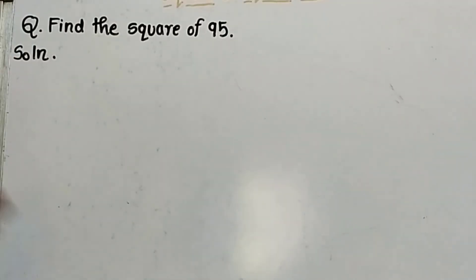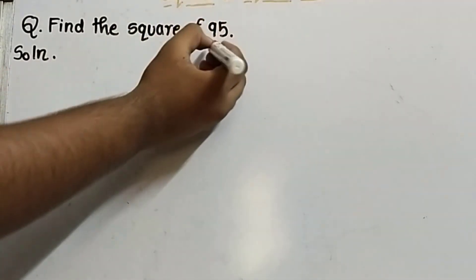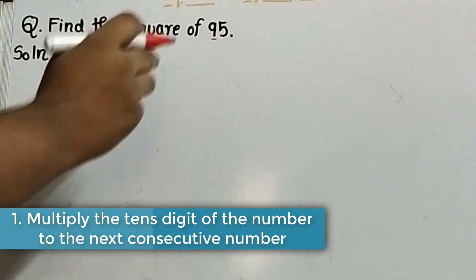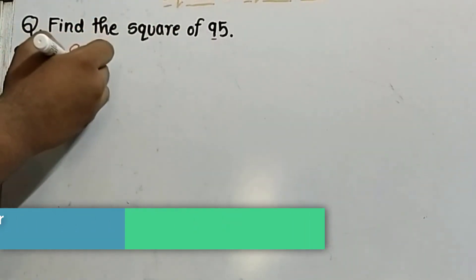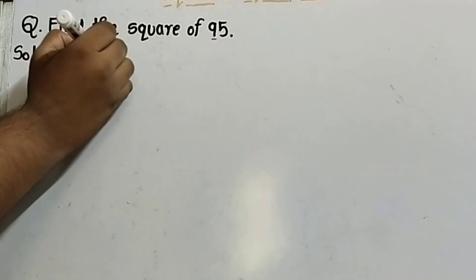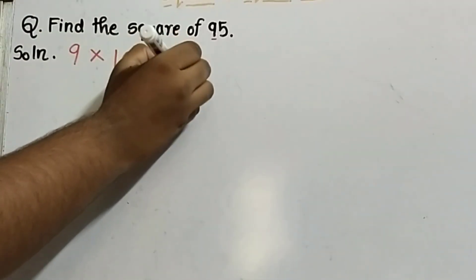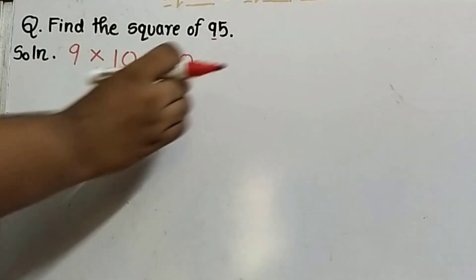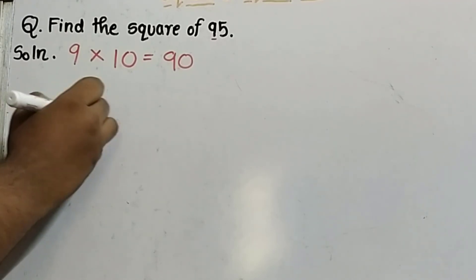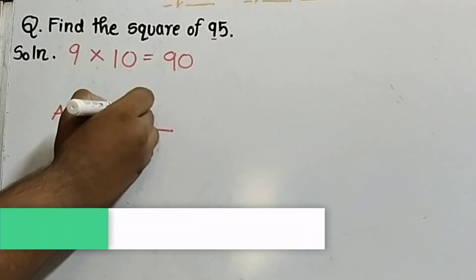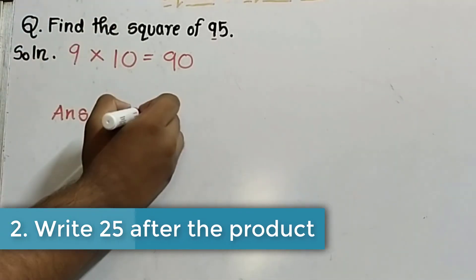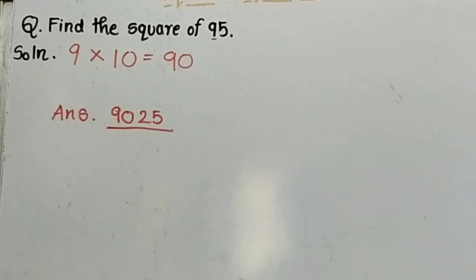Now let us apply this to find the square of 95. Take the 10th digit, which is 9, and multiply it by the next consecutive number, 10: 9 into 10 equals 90. Write 90 and then write 25 after it. So the square of 95 is 9025.